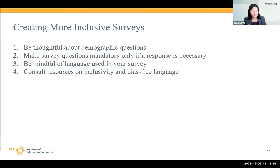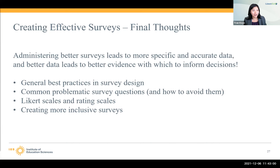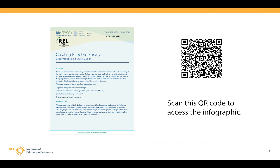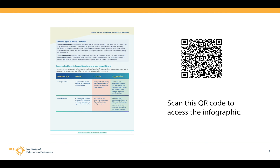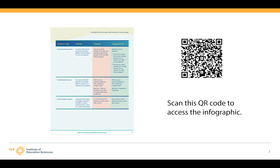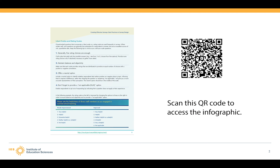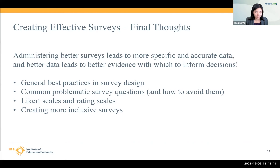My final thought is that when we administer better surveys, it leads to more specific and accurate data, which is what we want when collecting data. Better data leads to better evidence for making good, informed decisions. We do that by following the points I've covered in all the previous slides. We recently published an infographic and reference guide — just about eight pages — that summarizes everything I went over in this half hour. I highly suggest you get access to that.